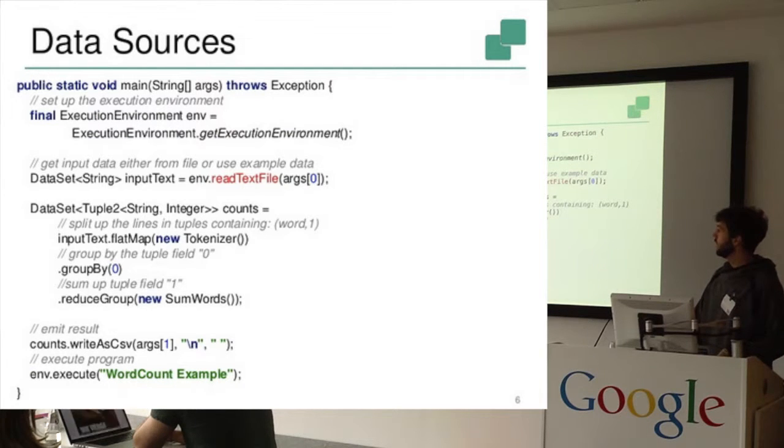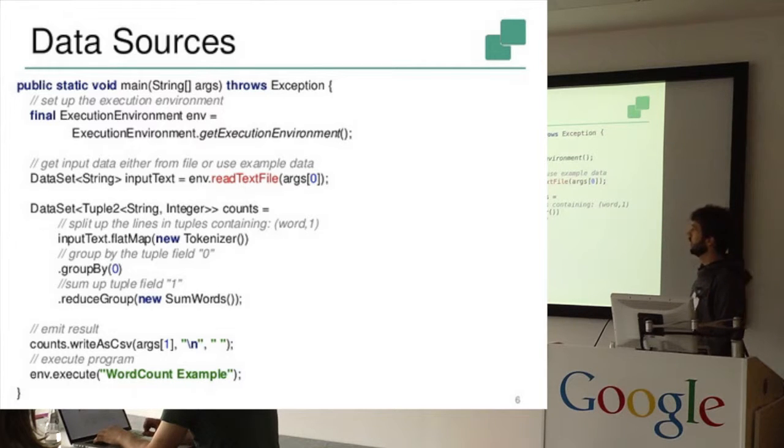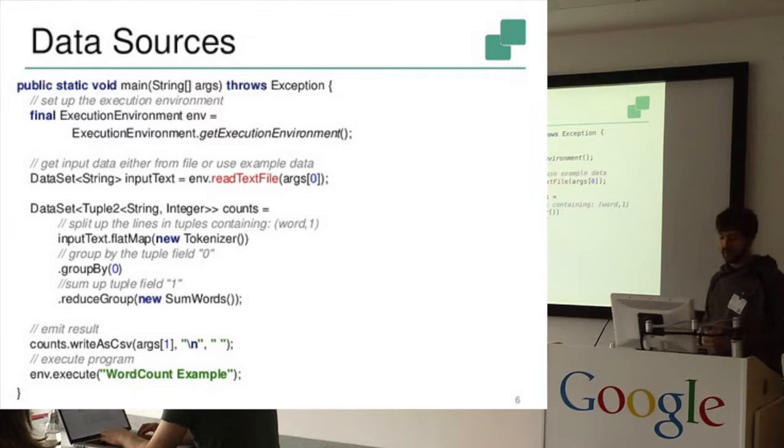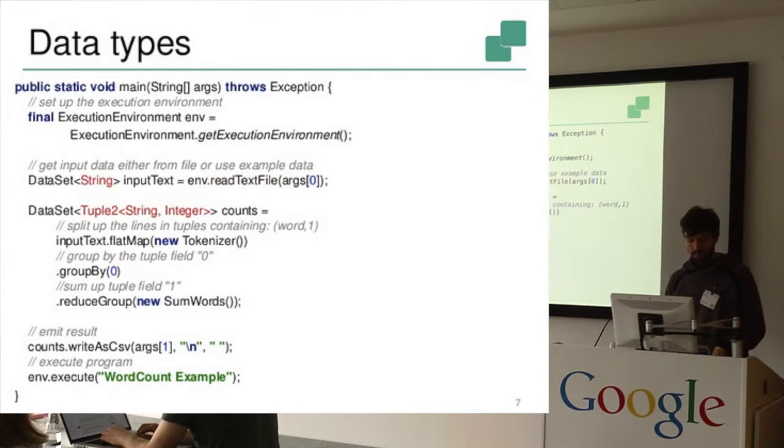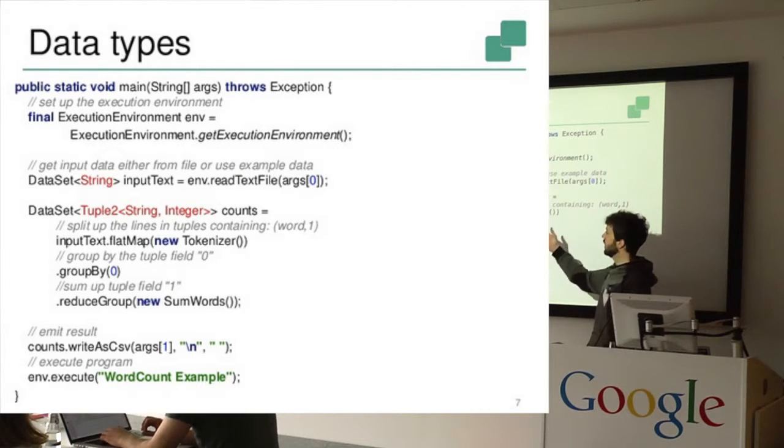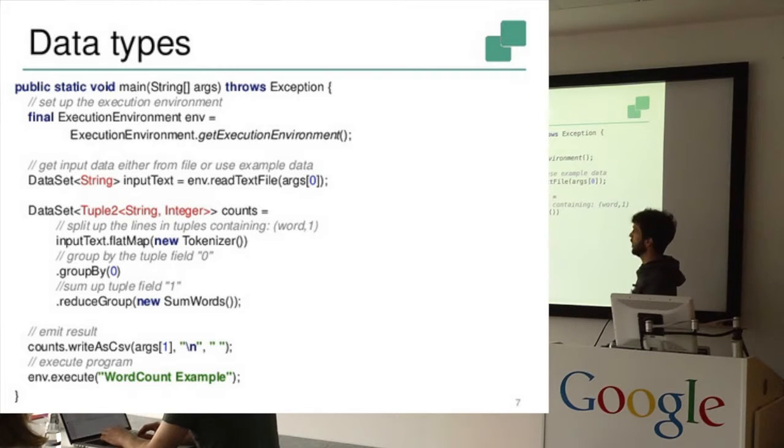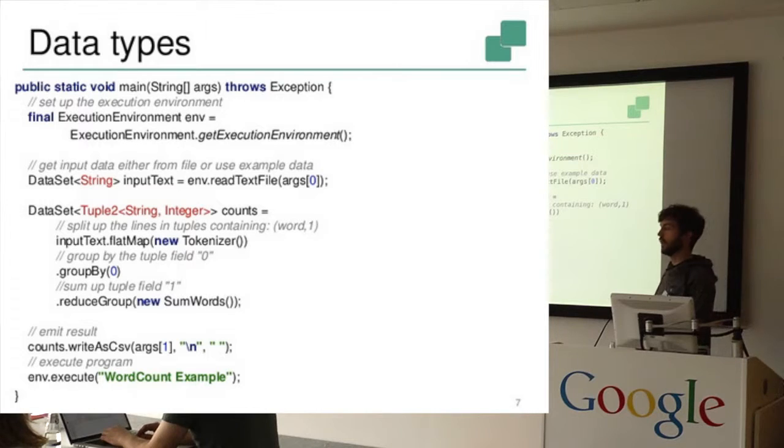So next thing we would do after creating an execution environment is create the data source, which is in this case simply reading from a text file and storing it in a set of strings. And yeah, as already mentioned before, you always have to specify the types. In the Scala API actually this is a bit nicer because it can infer a lot of the types and make it look a bit less verbose.